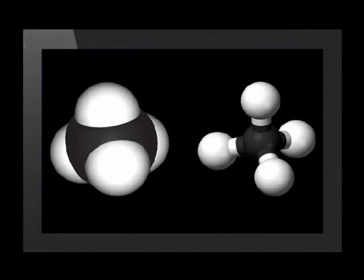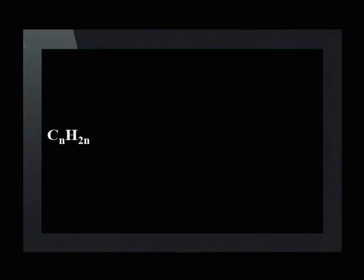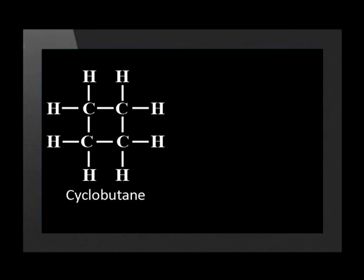Look at the models of a methane molecule. Note that methane is three-dimensional. The black ball represents carbon and the white balls the hydrogen atoms bonded to the carbon. This model is called close-packed because it better represents the shape of the molecule. This model shows how the atoms are bonded. Alkanes are also found as ring structures called cycloalkanes. In these compounds, the general formula is CnH2n. Look at the example of cyclobutane.